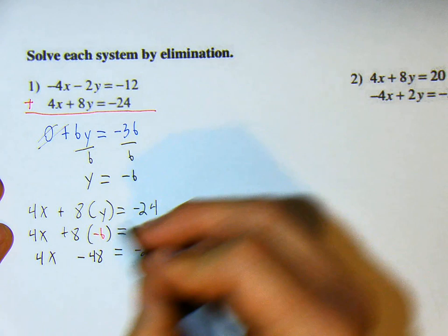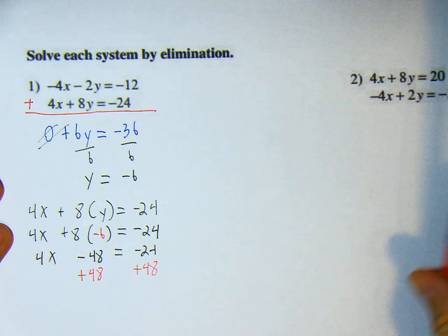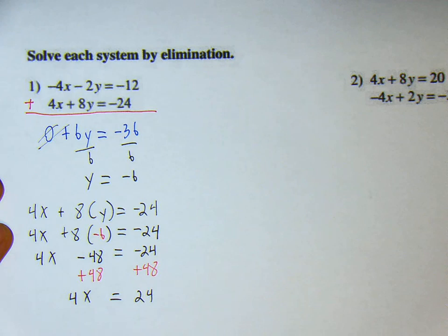And if we add 48 on both sides, we're going to get 24 is equal to 4x. Now if we divide by 4 on both sides, we get x is equal to 6.